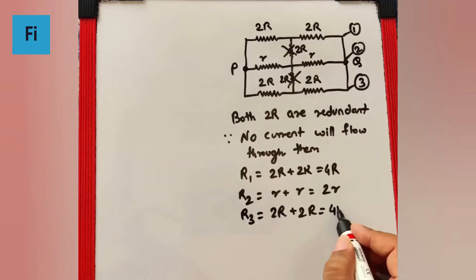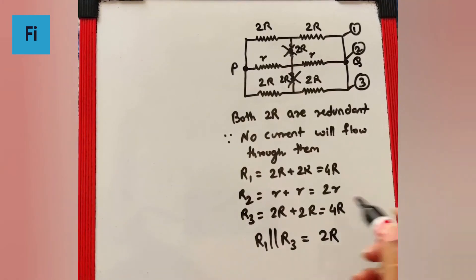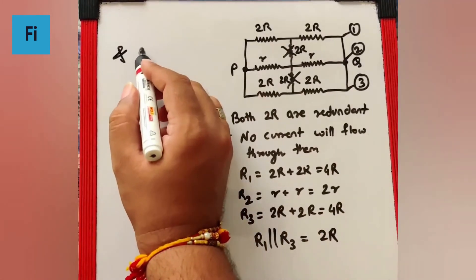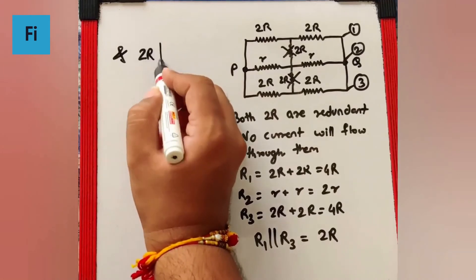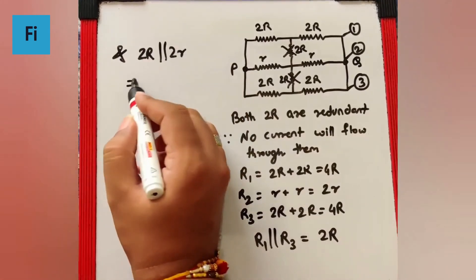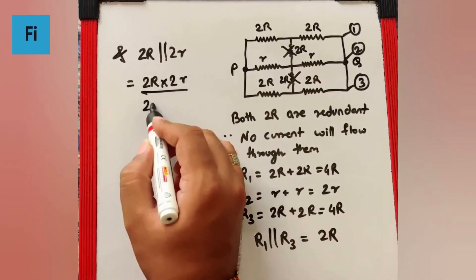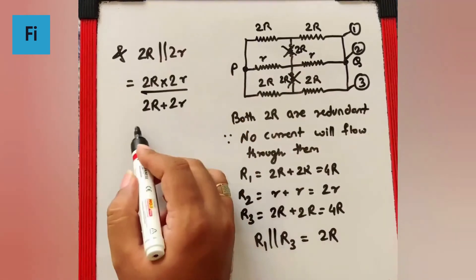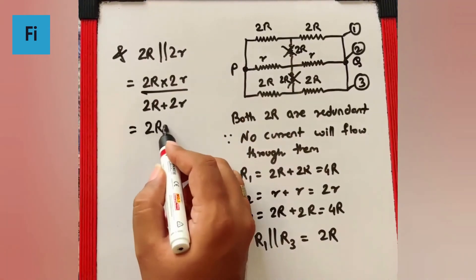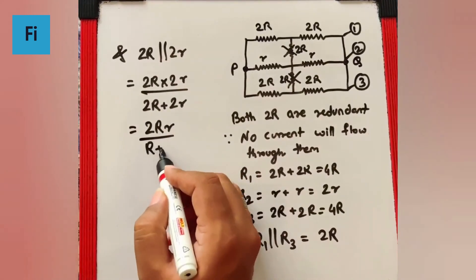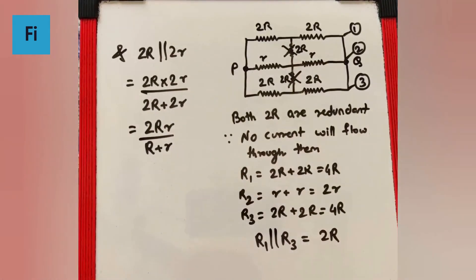Now we know R1 parallel to R3 will give 2R. 2R parallel with 2R gives 2R into 2R upon 2R plus 2R. That is going to be 2R plus 2R, and that is going to be our final answer.